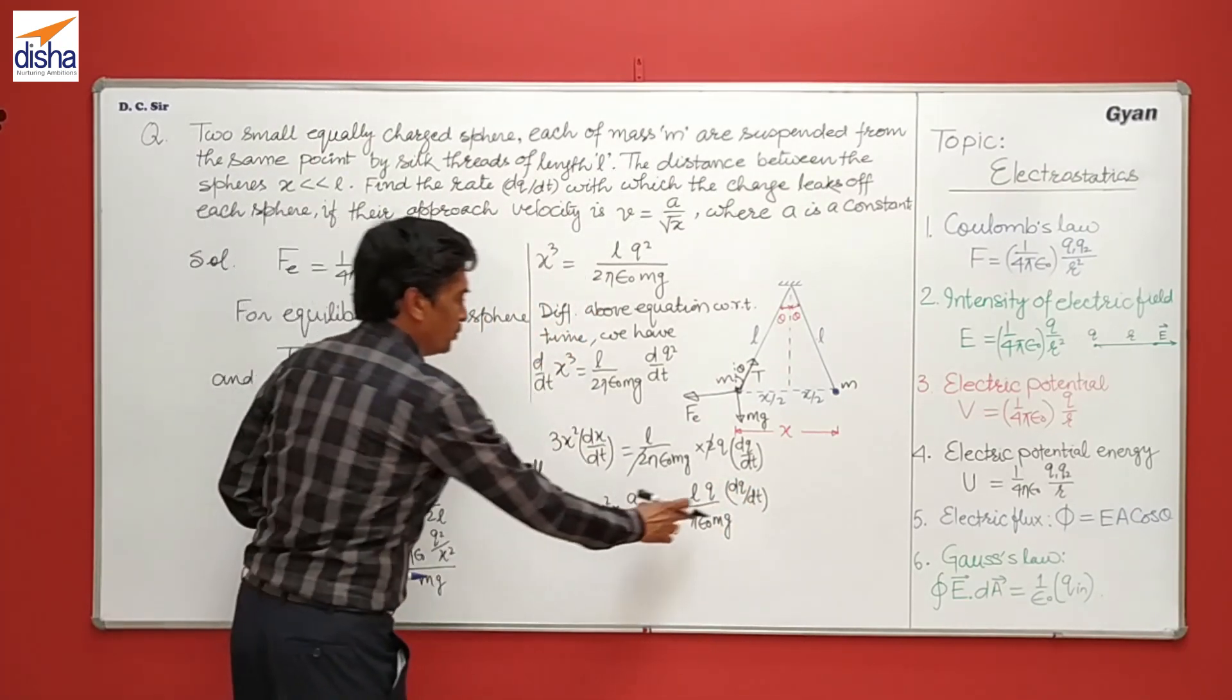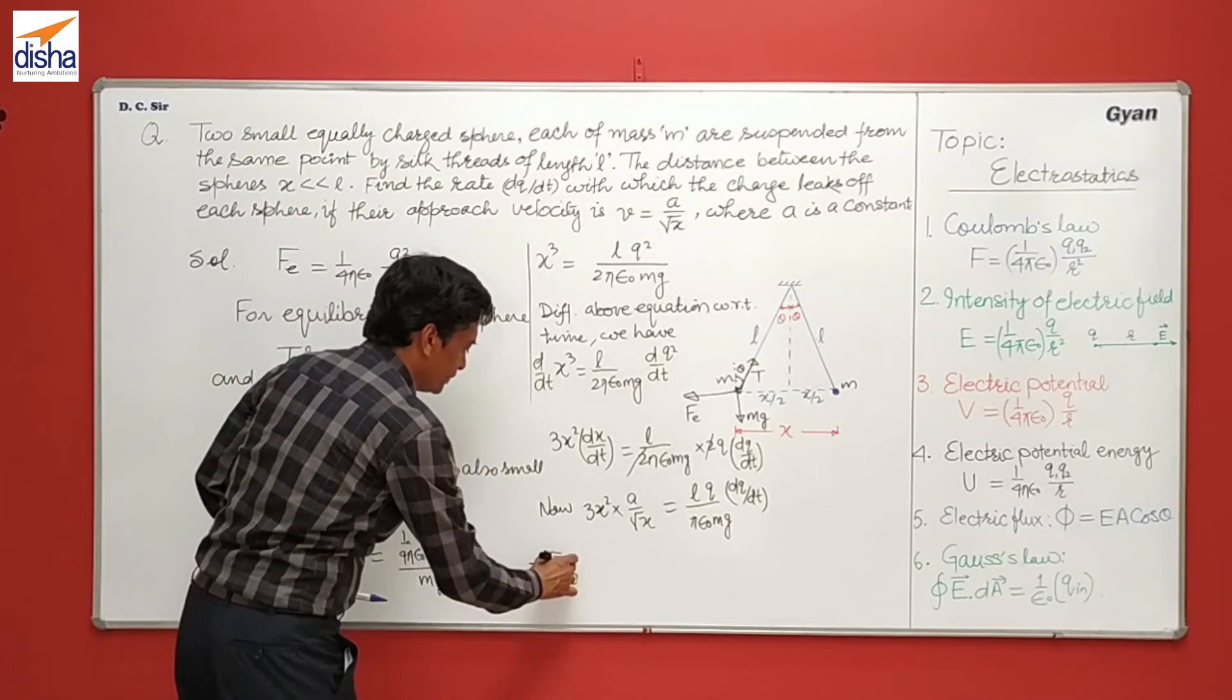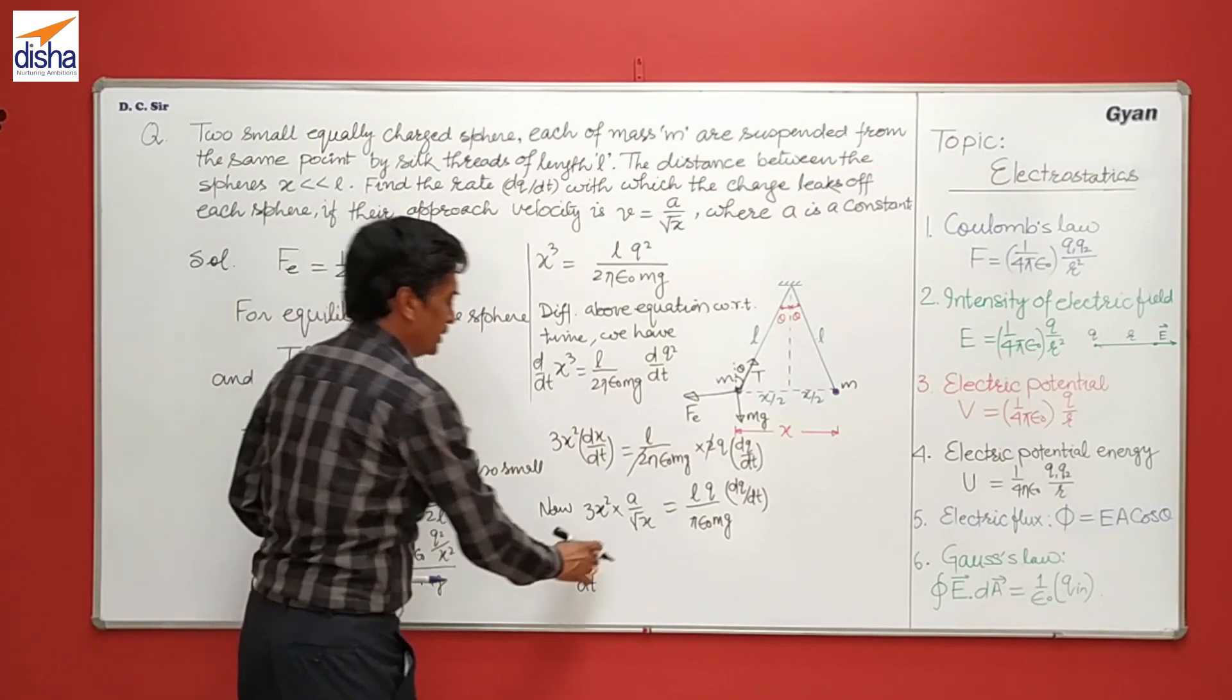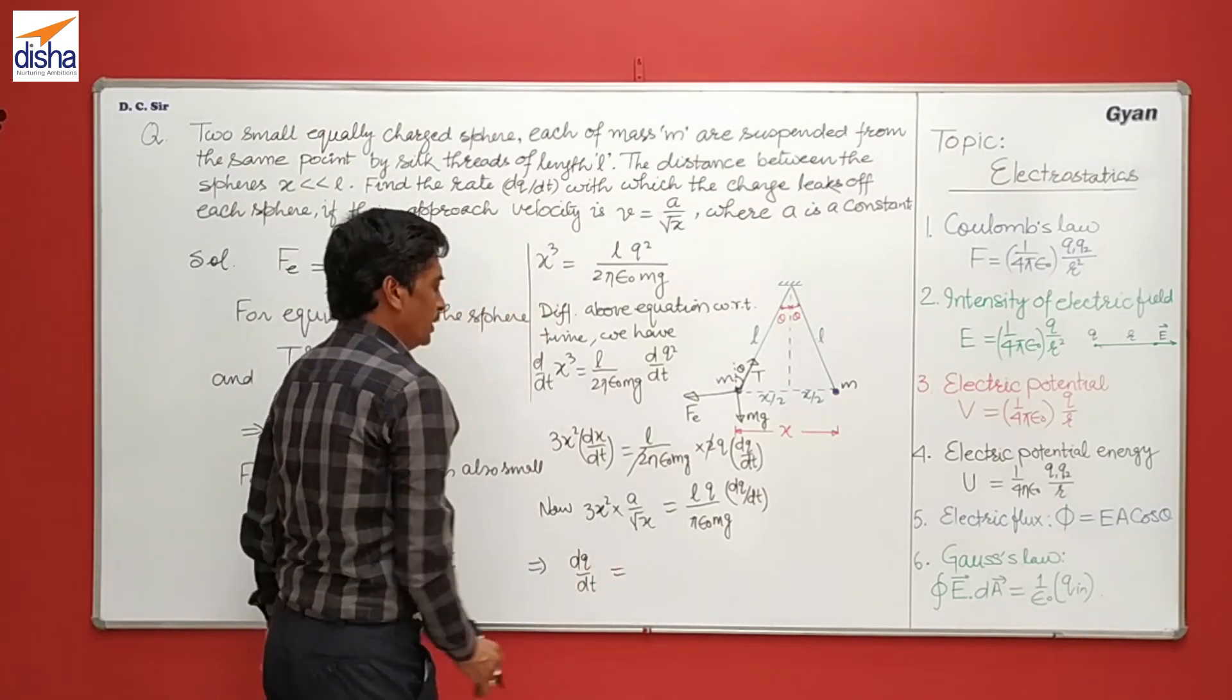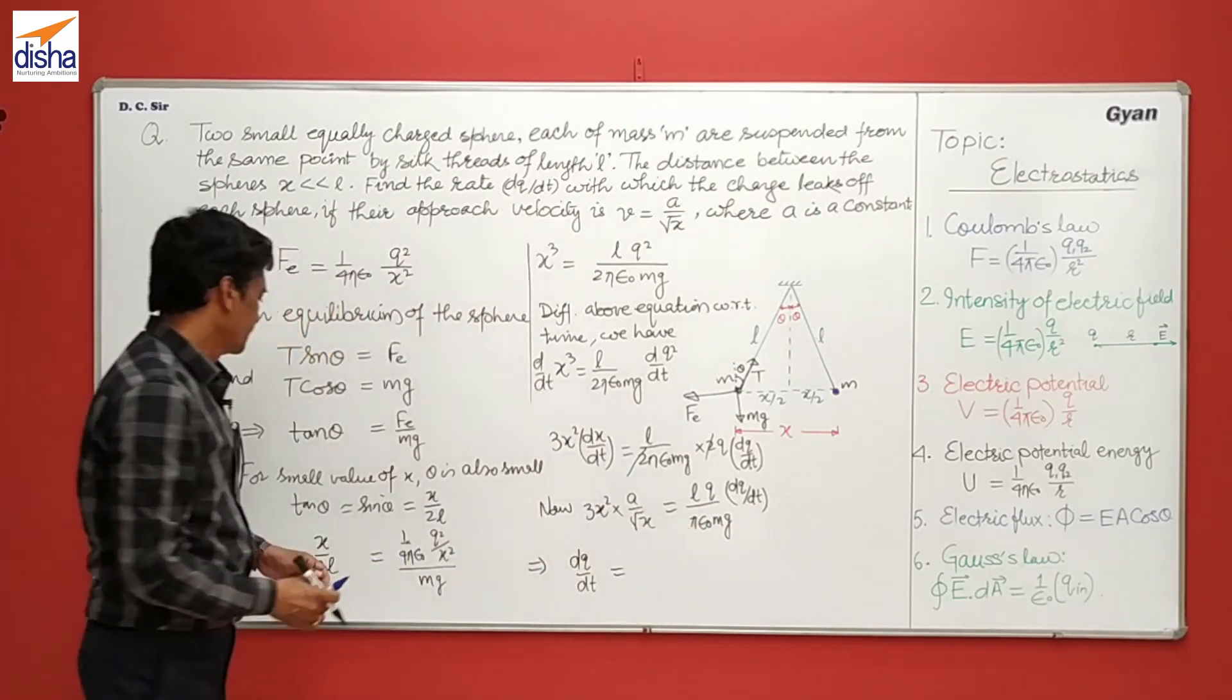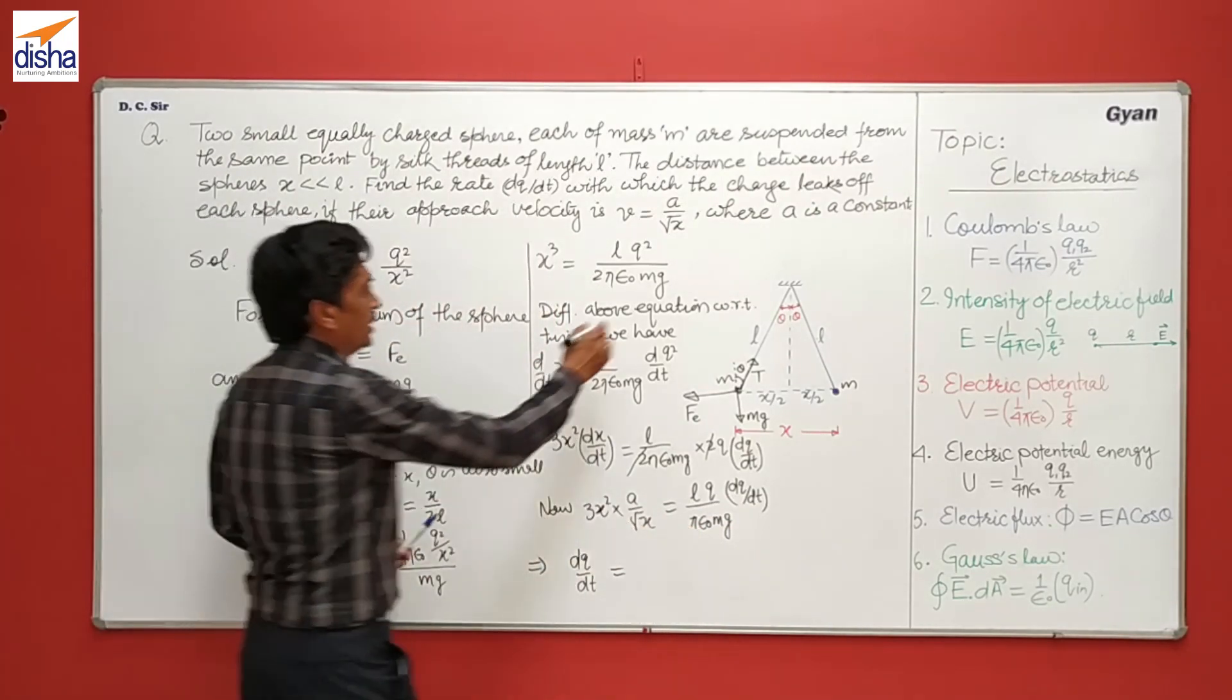So, solving this equation for dq over dt. This is the rate of leak of the charge, so it will be dq over dt, and using this equation, here, this equation, that is this first equation and second equation.